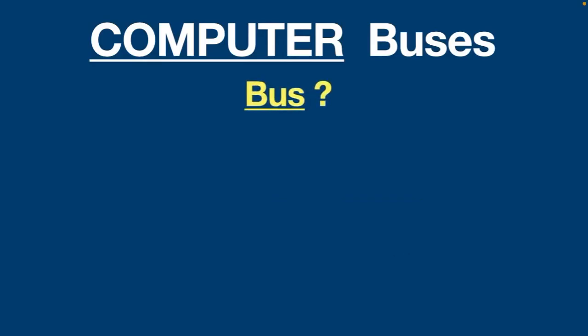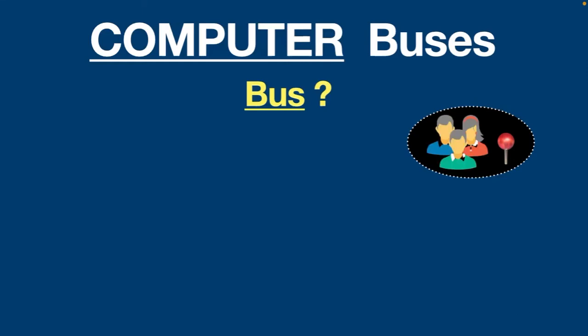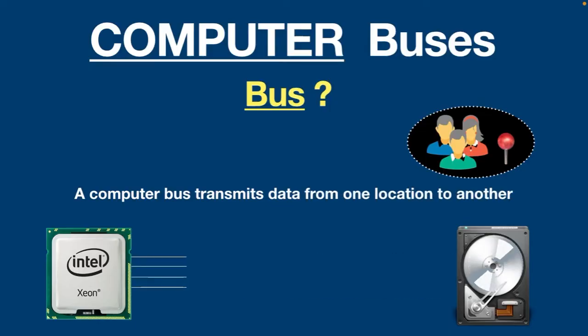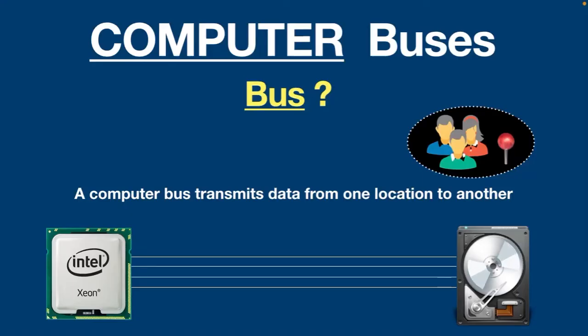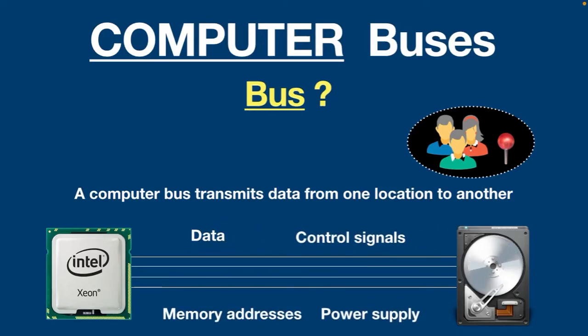What is a computer bus? This is what we really need to understand first before we get into the types. You can think of a computer bus like a public bus or school bus — used to transport people from one place to another. Just like these buses, a computer bus transmits data from one location to another. In simple terms, computer buses are electrical wires that connect various hardware components in a computer system. A computer bus carries data, control signals, memory addresses, and power supply to these components. You can say a bus is a common communication pathway used in a computer system through which data flows from one component to another via the motherboard.